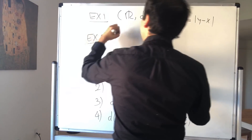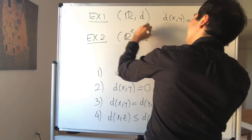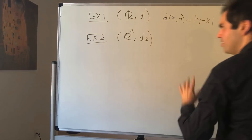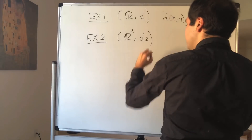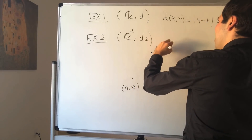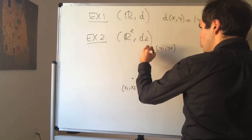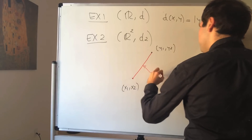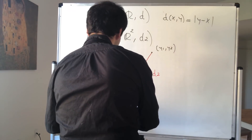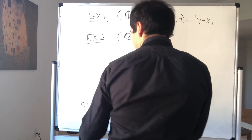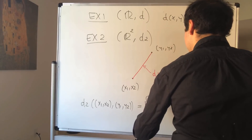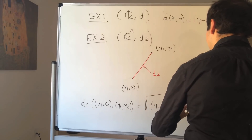To get more interesting and natural examples, let's go one dimension higher. Consider R² with the metric d₂ — so literally R², d₂ — where the distance between two points (x₁, x₂) and (y₁, y₂) is just the usual Euclidean distance: the square root of (y₁ − x₁)² + (y₂ − x₂)².